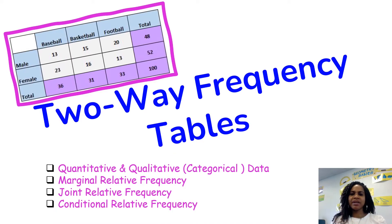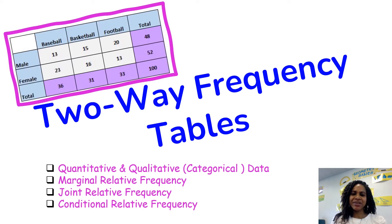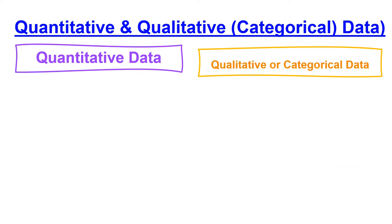In this lesson we're looking at two-way frequency tables, discussing joint, marginal, and conditional frequency, as well as quantitative and categorical data. Let's go ahead and get started. First, let's take a look at quantitative and qualitative or categorical data.